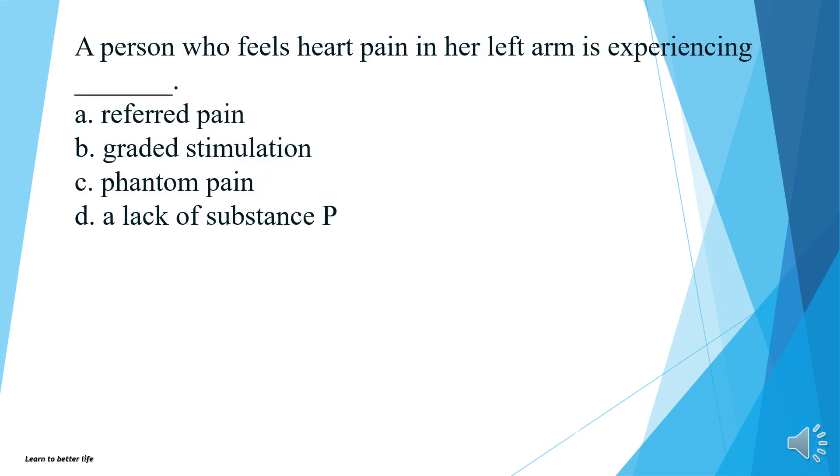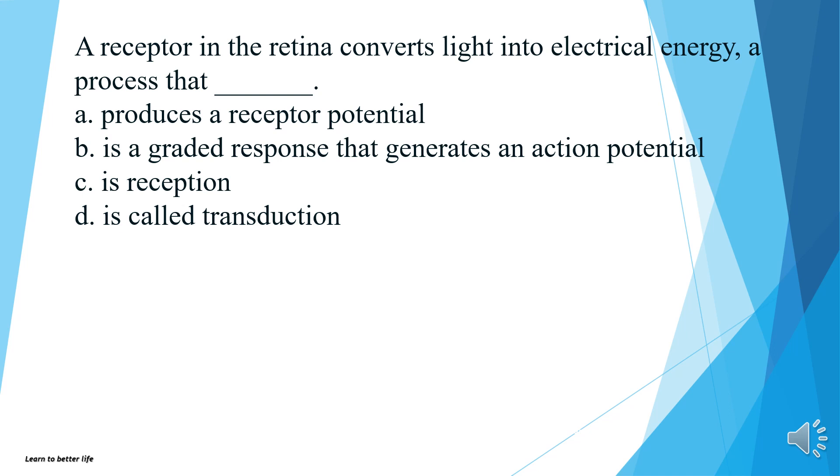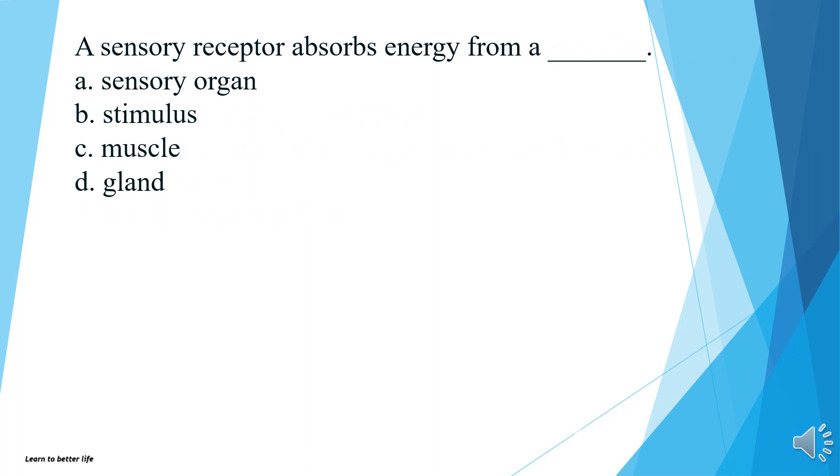A person who feels heart pain in her left arm is experiencing what? Referred pain, graded stimulation, phantom pain, or a lack of substance? The answer is A, referred pain. A receptor in the retina converts light into electrical energy, a process that produces a receptor potential, is a graded response that generates an action potential, is reception, or is called transduction? The answer is D, is called transduction. A sensory receptor absorbs energy from a sensory organ, stimulus, muscle, or gland? The answer is B, stimulus.